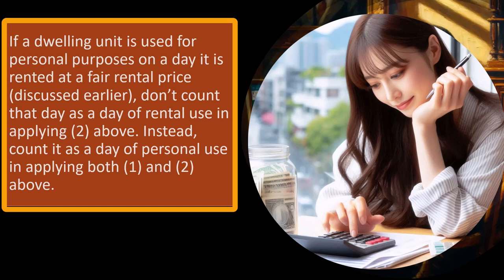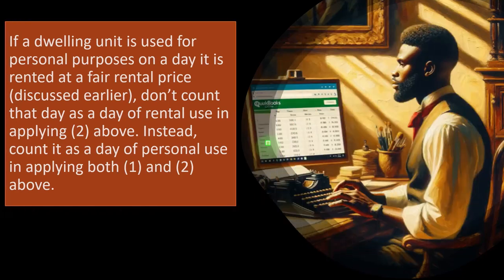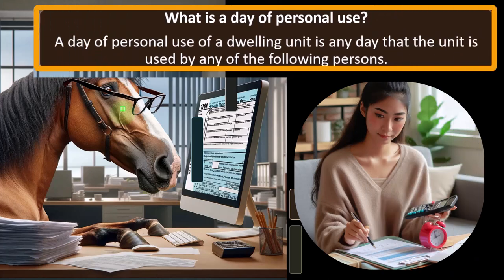What is a day of personal use? A day of personal use of a dwelling unit is any day that the unit is used by any of the following persons. Obviously, if you're hanging out in your rental property, that would clearly be a personal day. But what if family members are there, or you argue you're working on it — sitting in a hammock with a cocktail? The question is: are you working on the property, or are you there for vacation purposes?